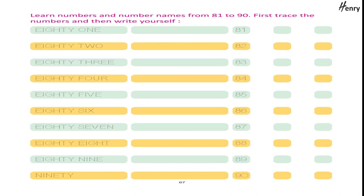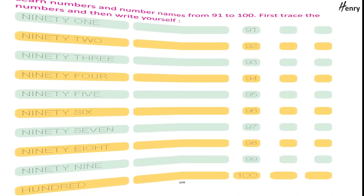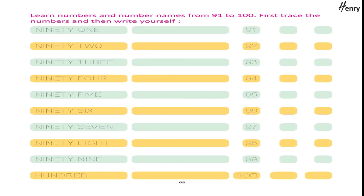86, 87, 88, 89, 90. Learn numbers and number names from 91 to 100. First trace the numbers and then write yourself: 91, 92, 93, 94, 95, 96, 97, 98, 99, 100.